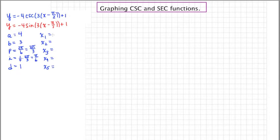To find the first key point in a cosecant graph, I set the expression inside the parentheses equal to 0. So if I take x minus pi over 2 and I set it equal to 0, I simply get x equals pi over 2.